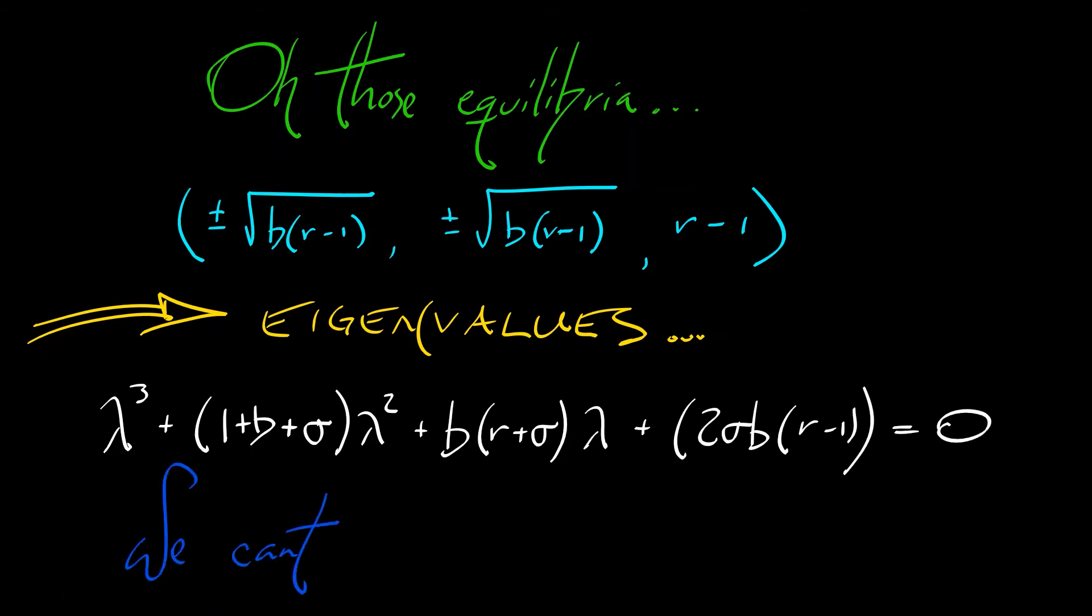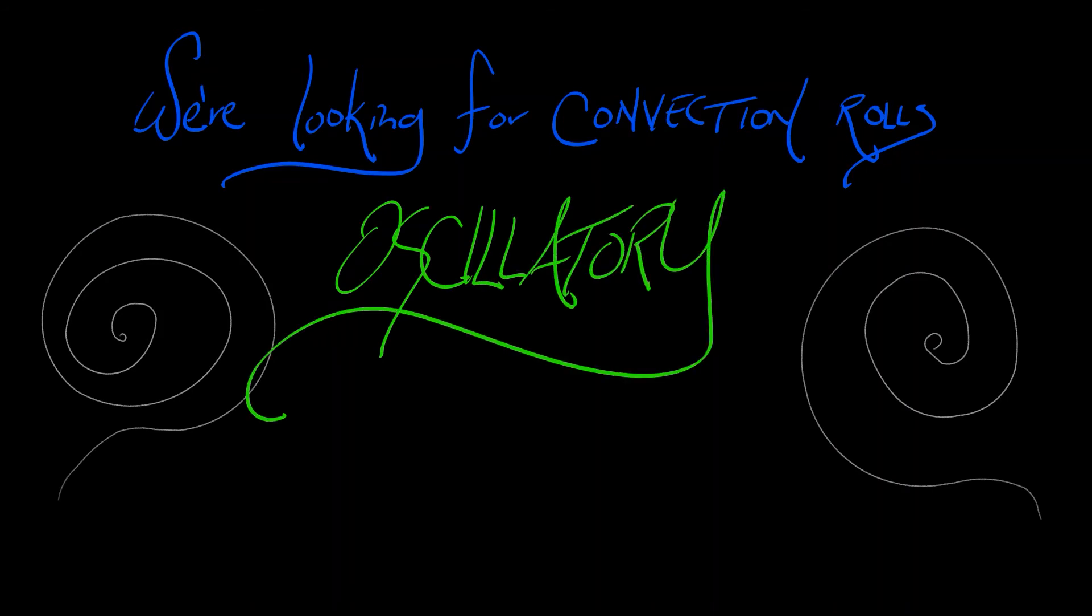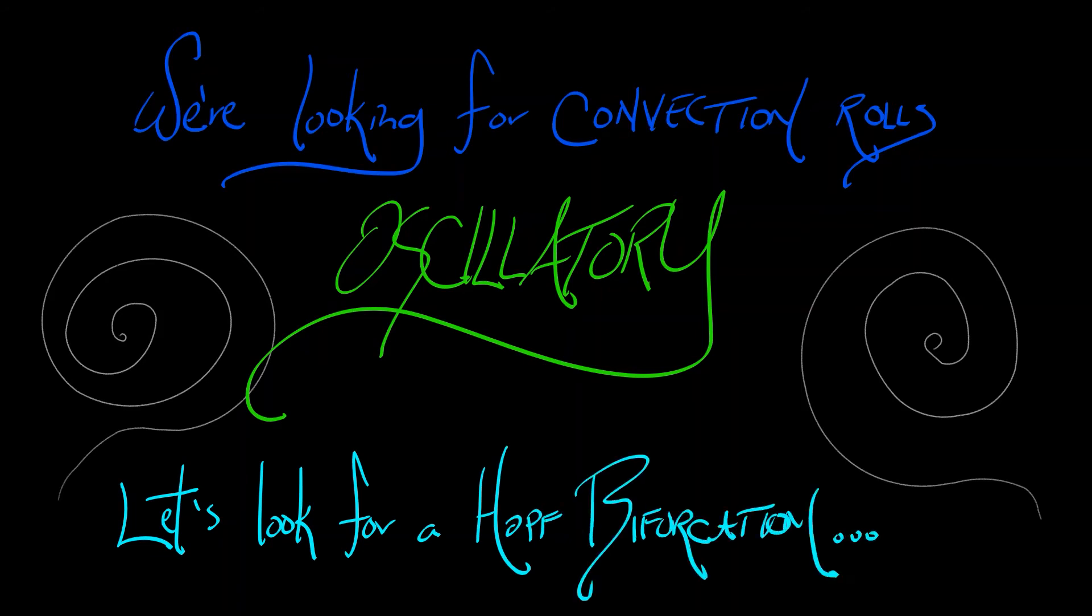We cannot solve this easily, but what we can do is think. What is it that we're looking for again? We're looking for convection rolls in the atmosphere where the air rises and then it falls and rises and falls. That is oscillatory in nature.